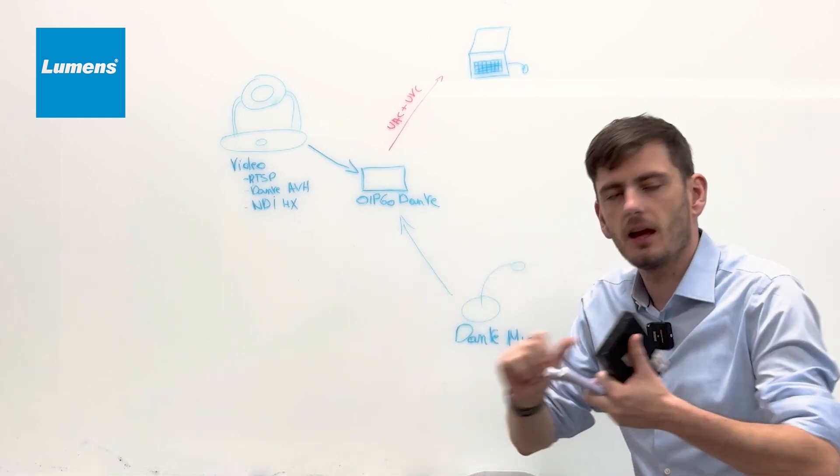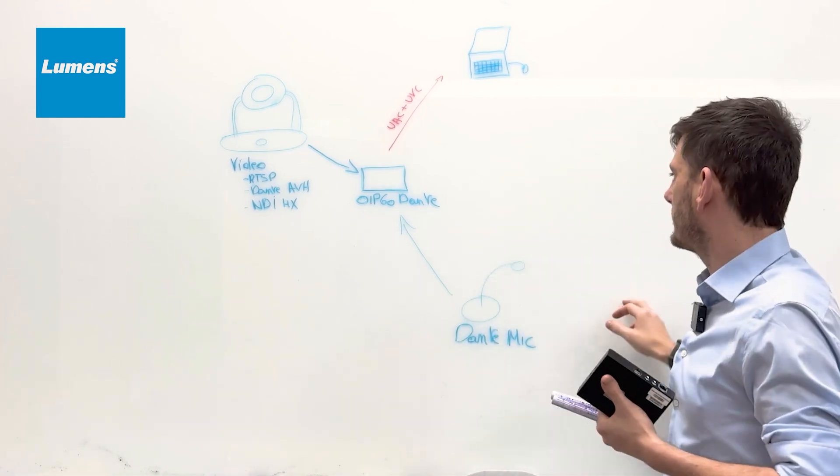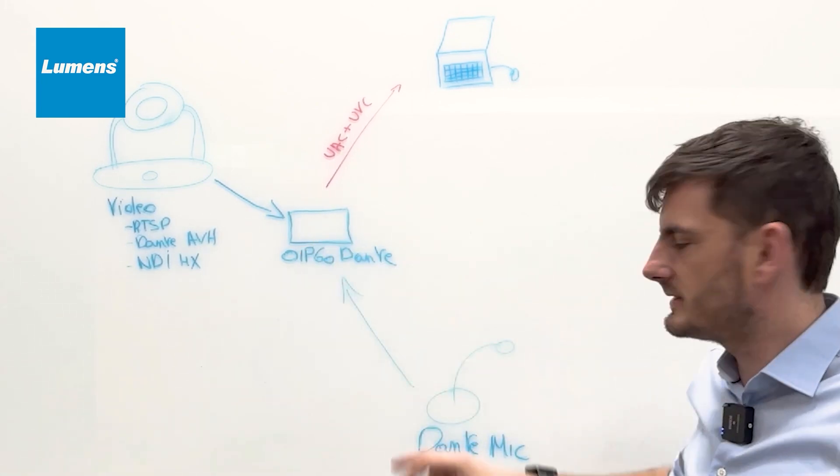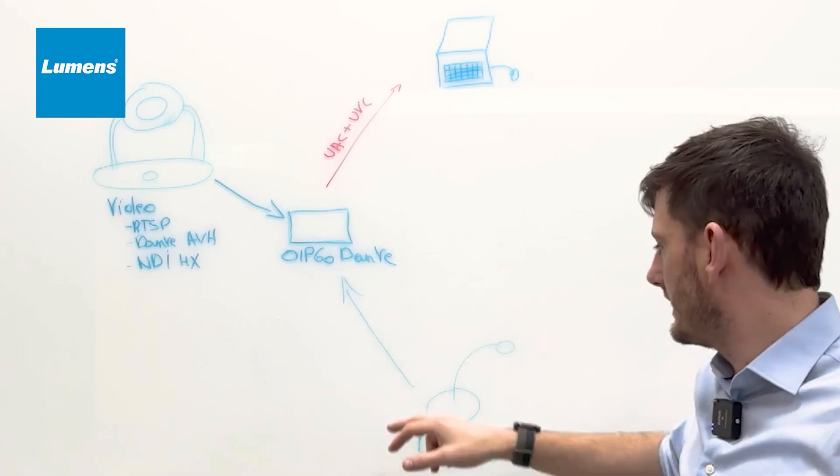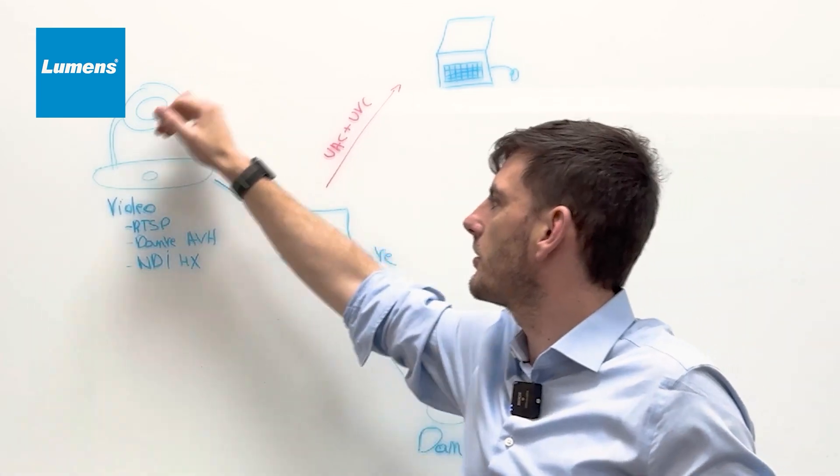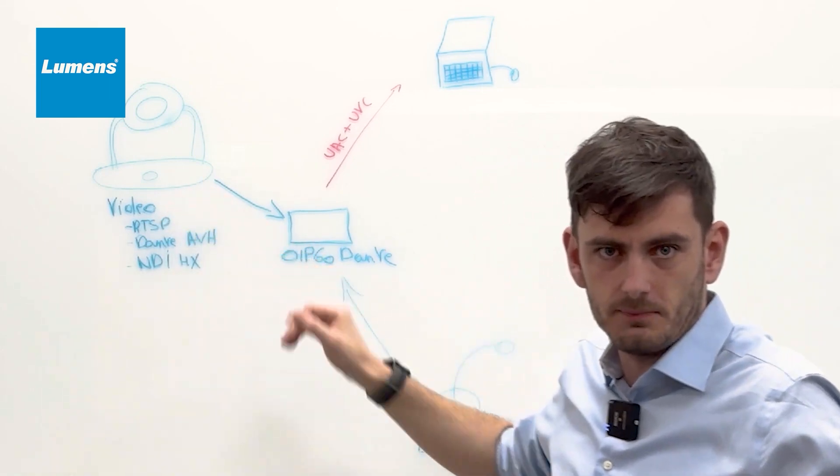but it can be a ceiling microphone, can be a round pot at the table that will send over the network to our OIP60D Dante the audio signal. We can get in the video signal from our camera over IP. So that's easy.